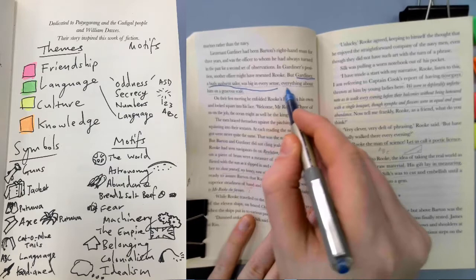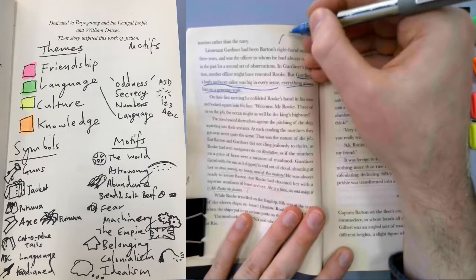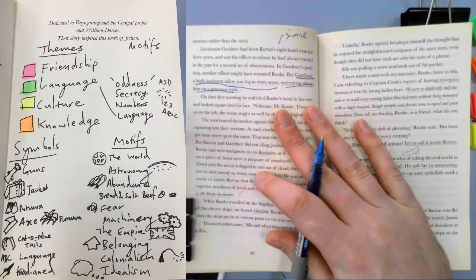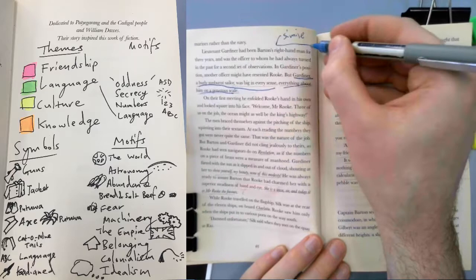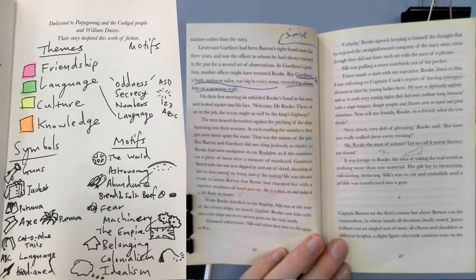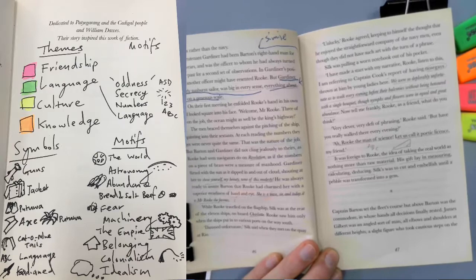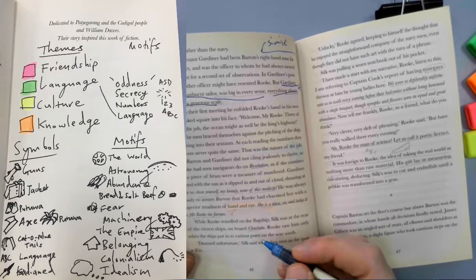So Gardner, a burly sunburnt sailor, was big in every sense. Everything about him was on a generous scale. So we've got Simile, which is one of our rare Rook Similes. So when you find one, you kind of have to point it out because keep in mind, Kate Grenville is a very floral and good writer. And Rook is sort of her creative challenge to be a little bit less verbose. And so that's partly why I believe Silk is a character that's being used often for that purpose.